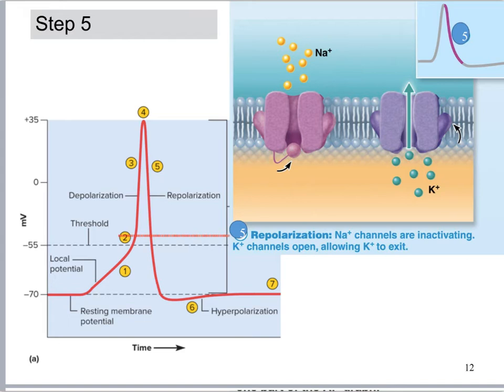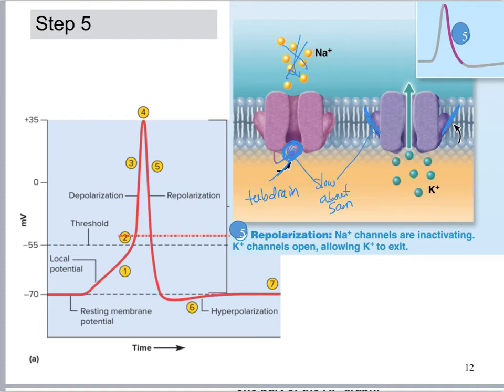Now we're seeing the inactivation gate — it plugs it. I want you to think of a tub drain: the water begins to go down, and that will pull the tub drain in and plug the tub. Now sodium cannot go in. But by the time this inactivation gate shuts, notice what the potassium gates have done. This slow gate and the potassium slow gate are about the same speed. This is going to let lots of potassium out and stop the inflow of sodium, which means it's going to start bringing down the resting membrane potential.